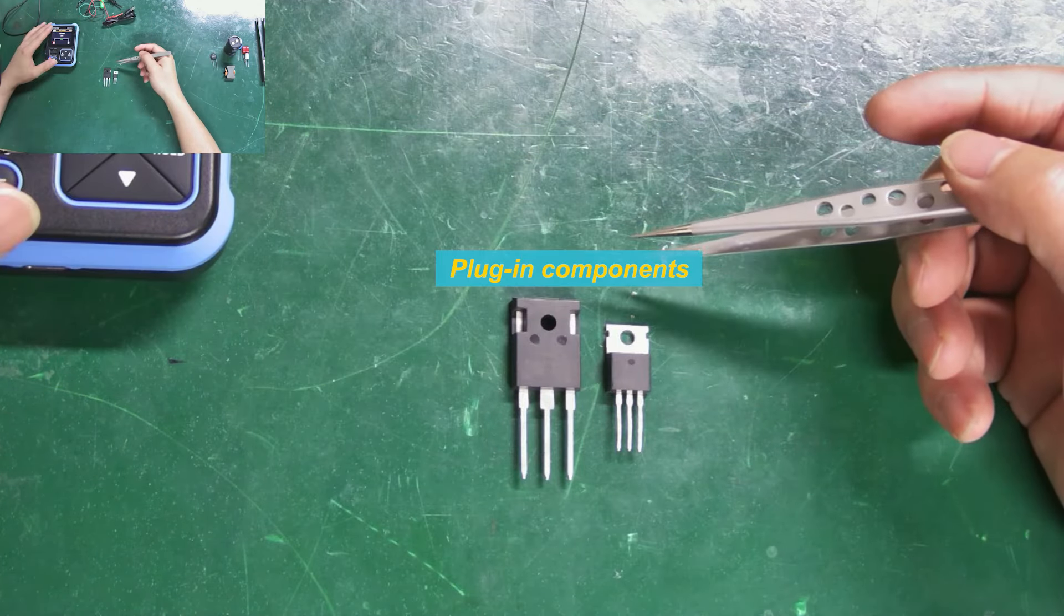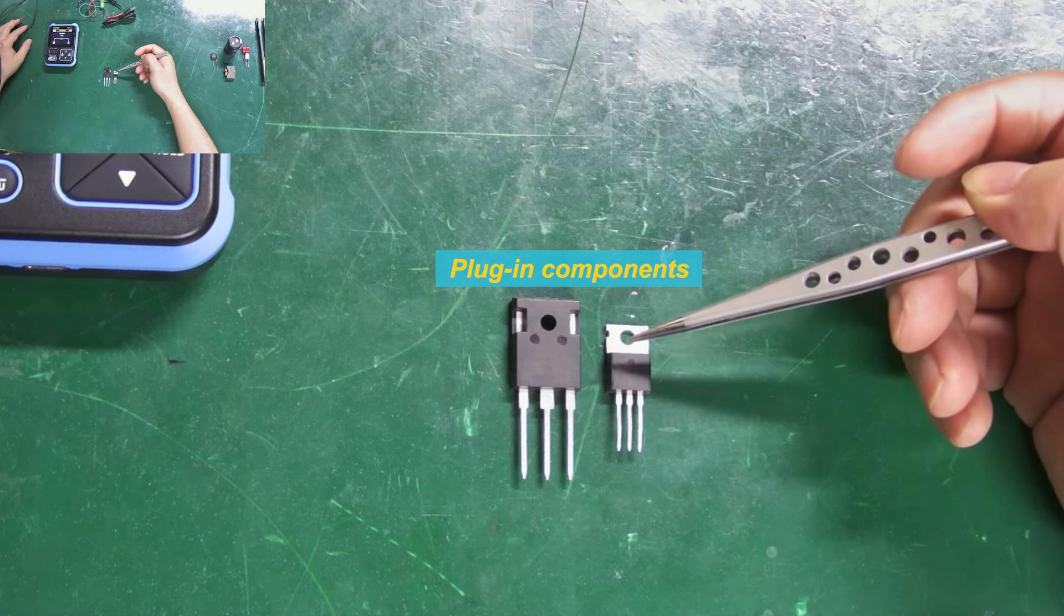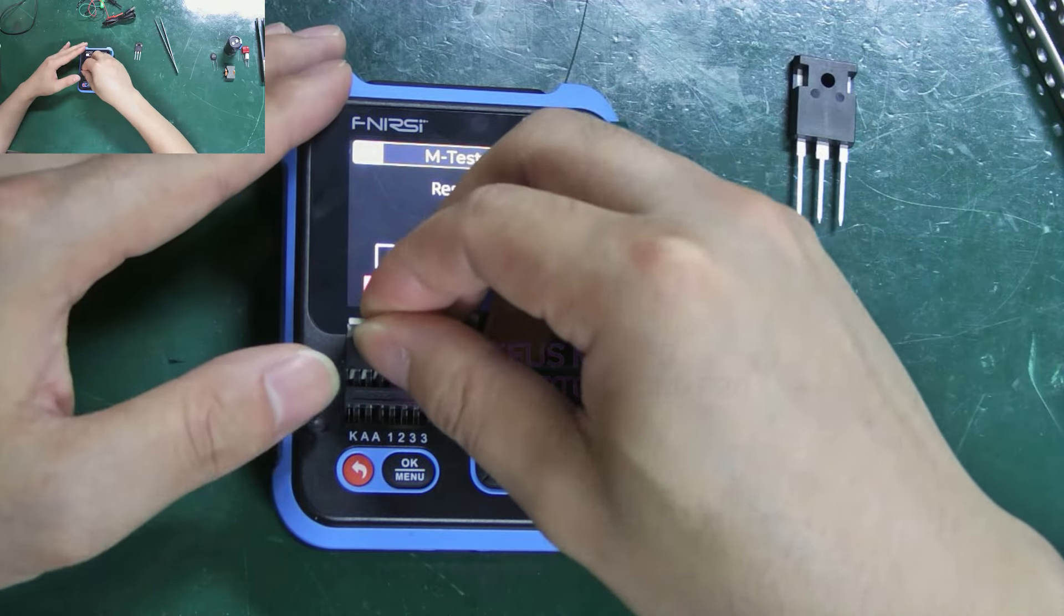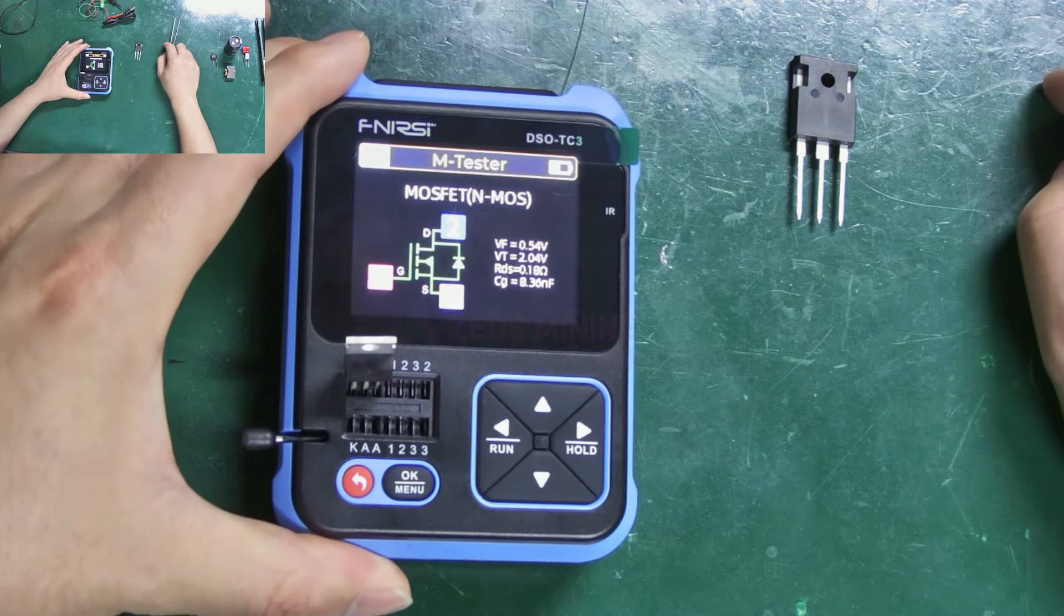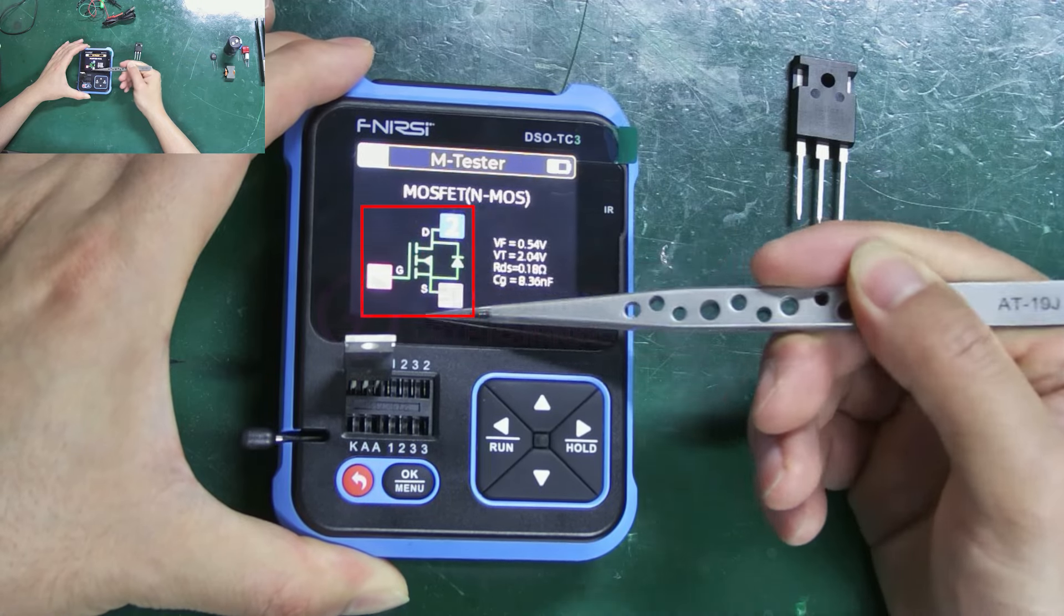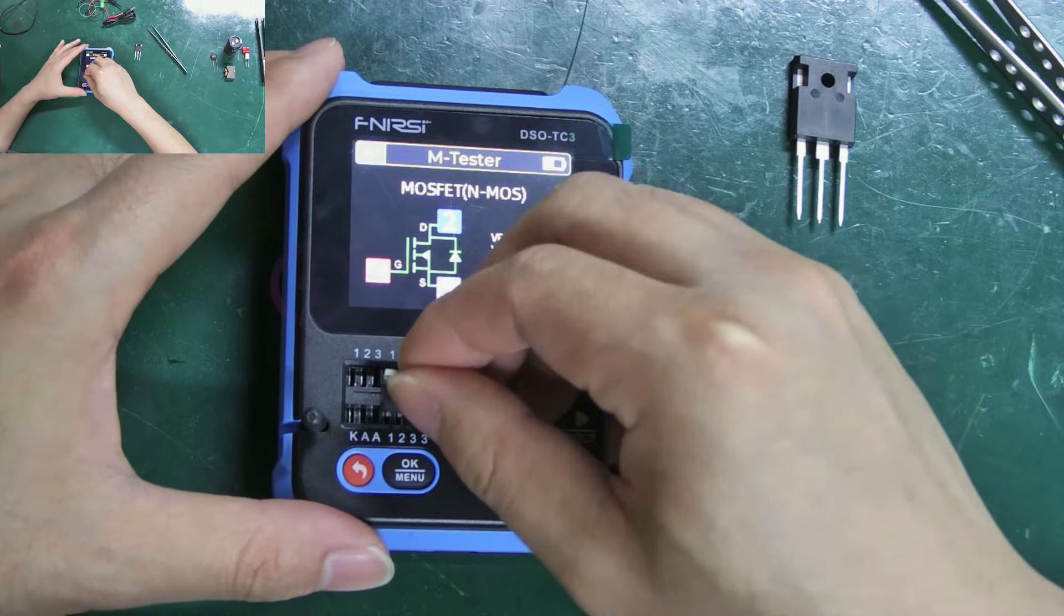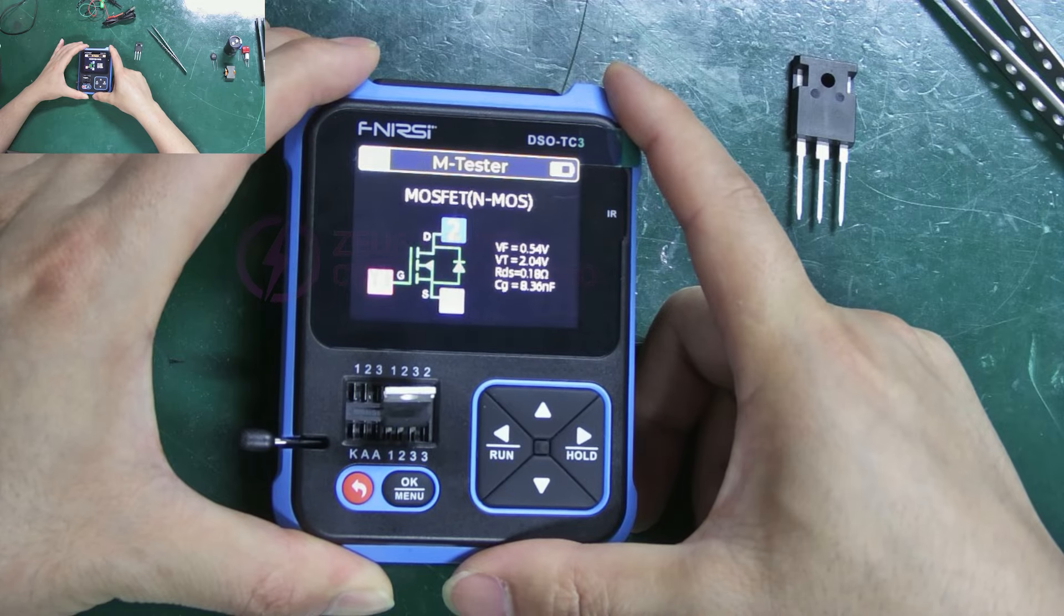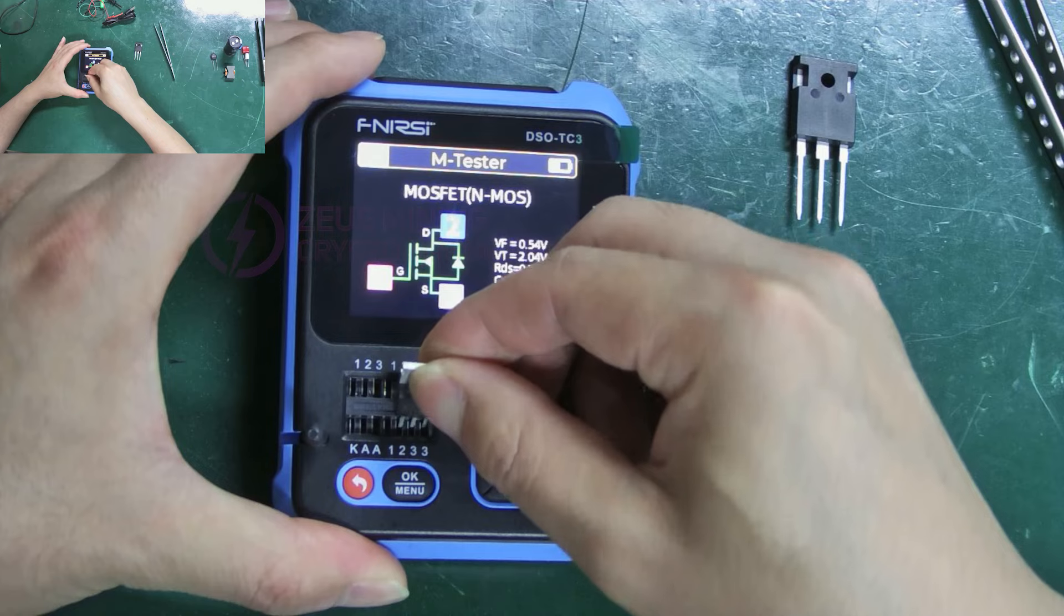These are plug-in components. We can use the tester to identify whether it is a MOS tube or a dual diode. It can be inserted from either the front or the back. According to the measurement results, it shows that it's an N-channel MOSFET and provides its pin definition diagram. Inserting it in this area can also get related information. If inserted like this, corresponding to two-three, the measurement result will be incorrect.